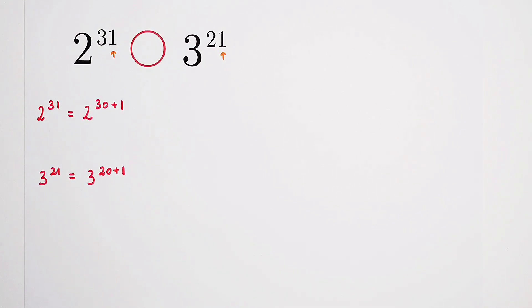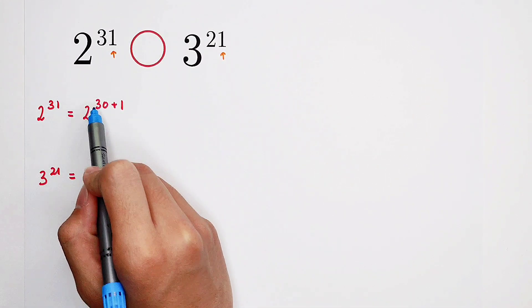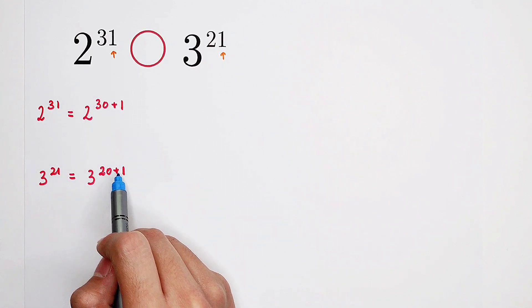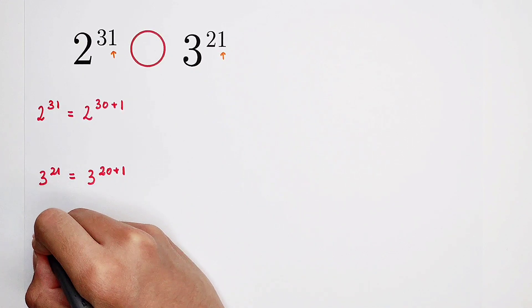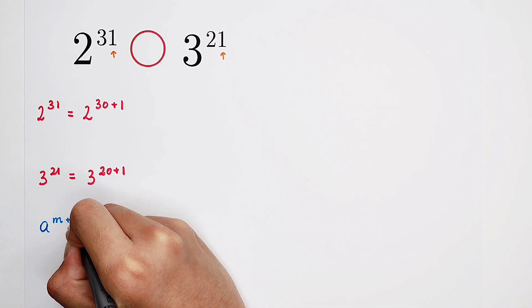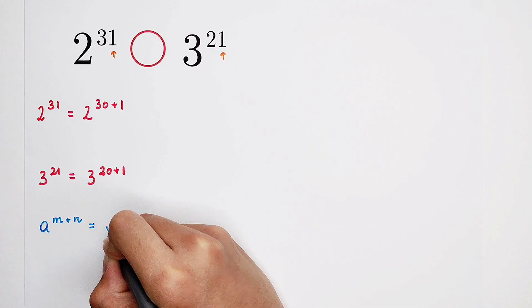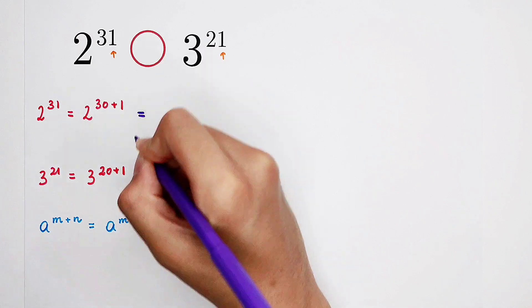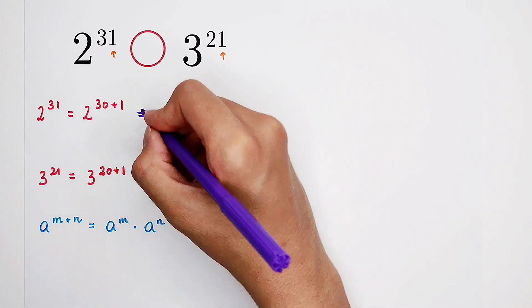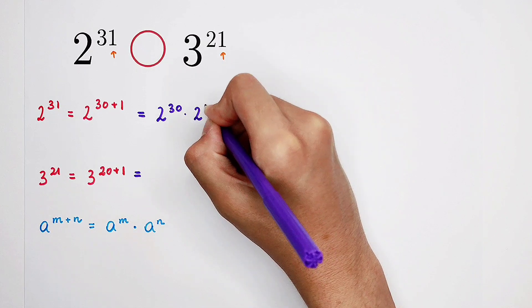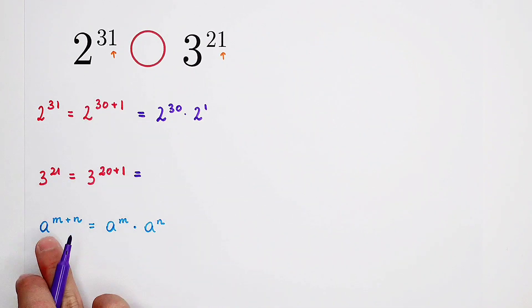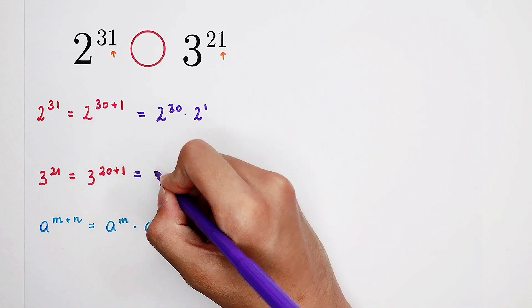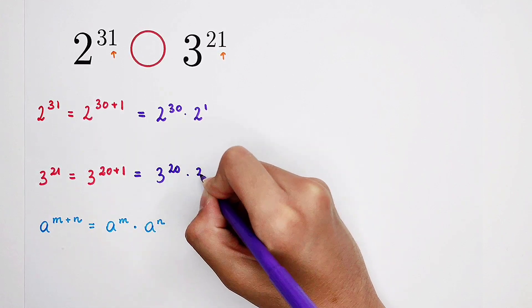I'm going to use the formula: A to the power of M plus N equals A to the power of M times A to the power of N. The exponents have the same addition form. So 2 to the power of 30 plus 1 becomes 2 to the power of 30 times 2 to the power of 1. And 3 to the power of 20 plus 1 becomes 3 to the power of 20 times 3 to the power of 1.